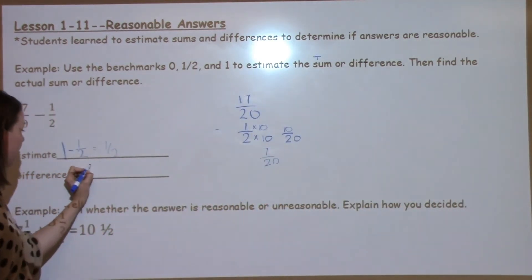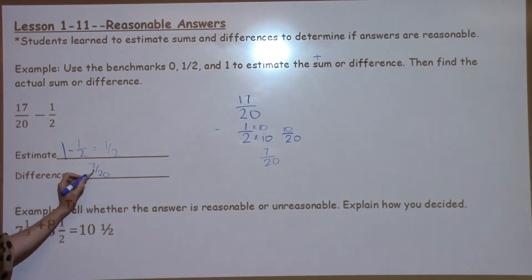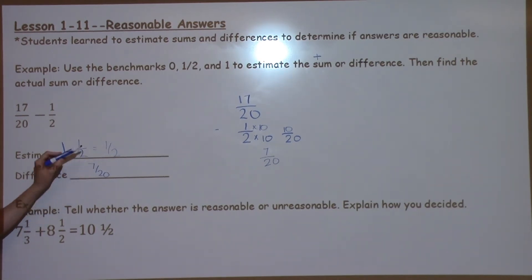I take this over to my answer. 7 20ths is the difference. Is my answer reasonable? Well, I know that about half of 20 is 10. So yeah, my answer is reasonable. When I estimated, I got about a half. So this answer makes sense.